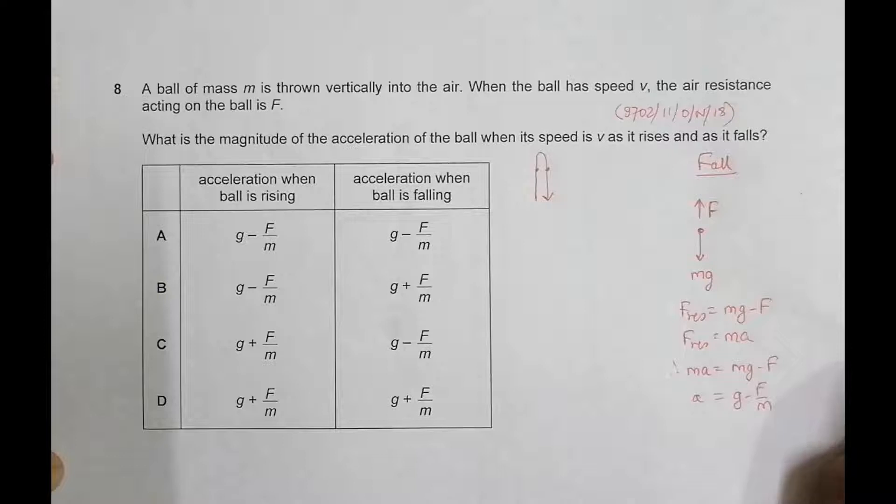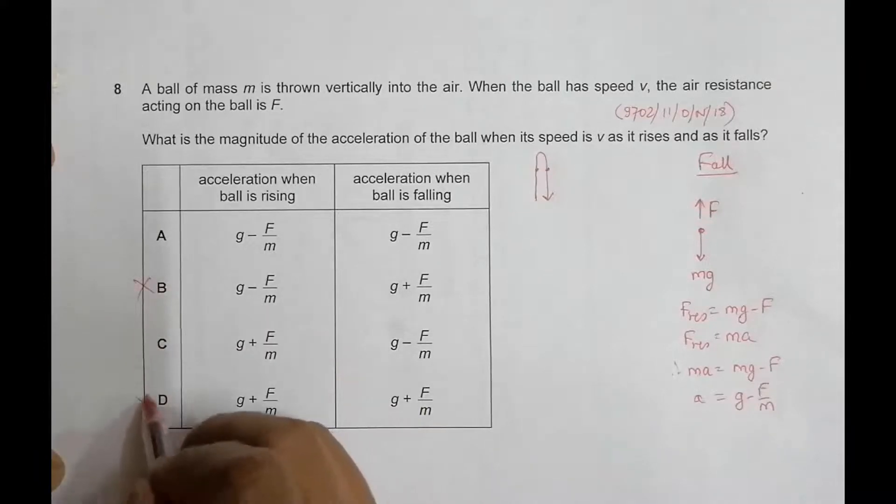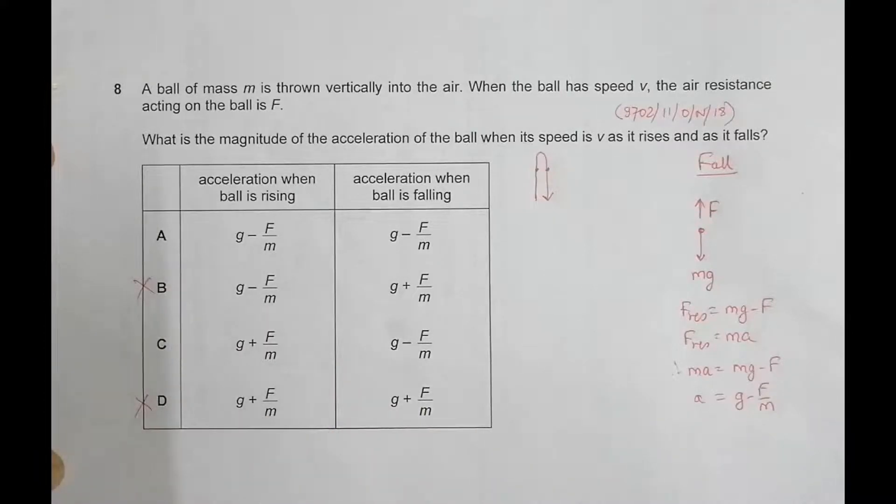So the value of acceleration during fall is g minus F by M. So if you go to the choices, choice number B and D already has disqualified. The only choices remaining are A and C.